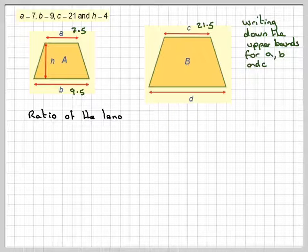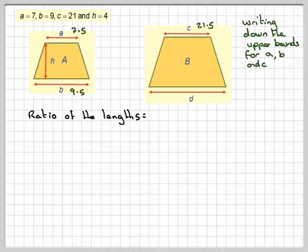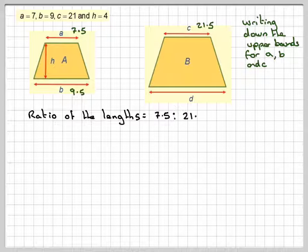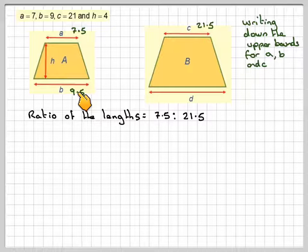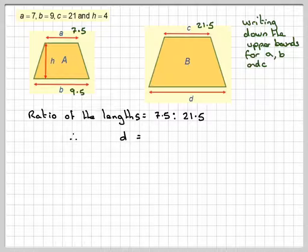Now we can write down the ratio of the lengths. Because we've got two similar lengths, it's going to be 7.5 to 21.5, and now we need to get this value d from 9.5.